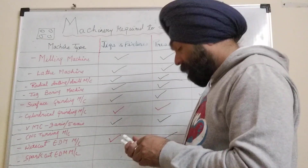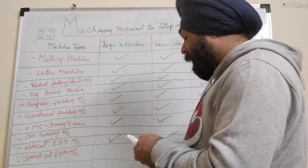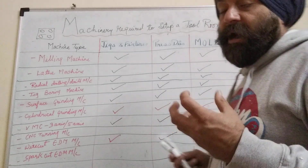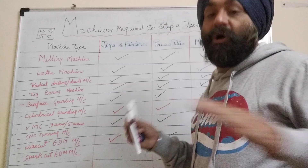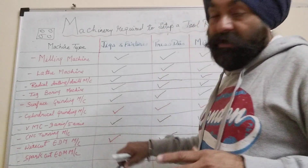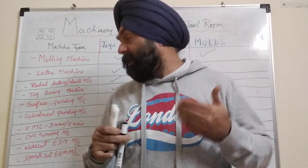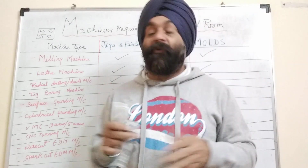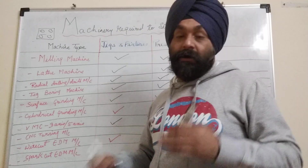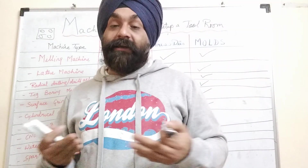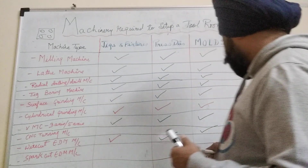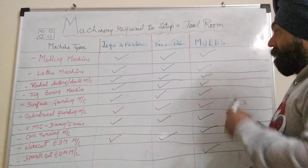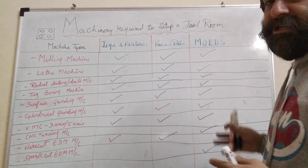Spark cut EDM is used when you need to machine a blind profile — one that does not go all the way through. The key difference is that wire cut EDM handles through-profiles, while spark cut EDM handles blind profiles such as those found in molds. This completes the basic machine setup required for a tool room.